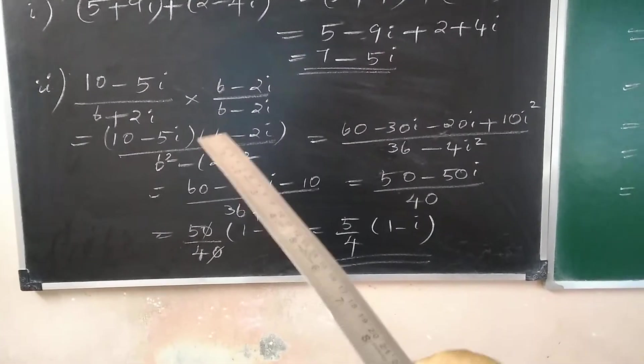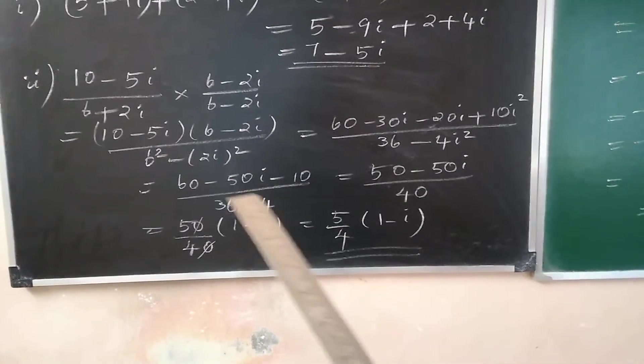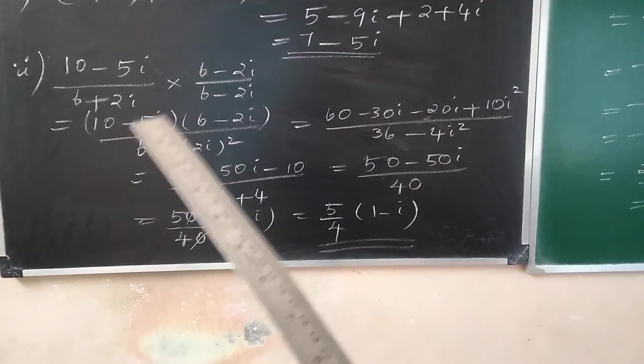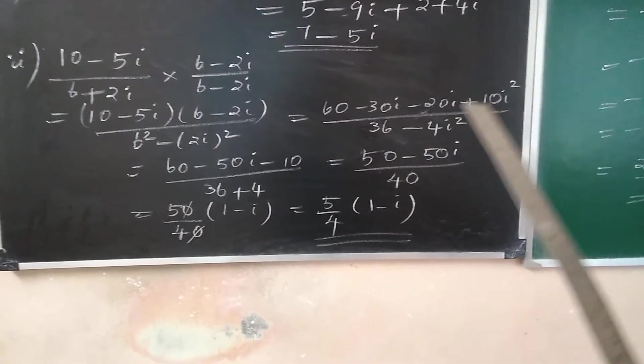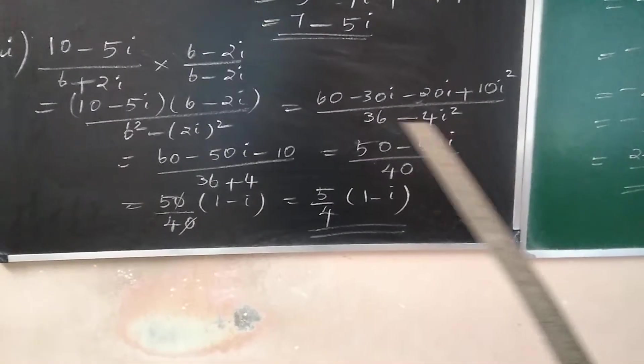Numerator I am multiplying term wise: 10, 6 or 60 minus 5i into 6 is minus 30i minus 2i into 10 is minus 20i minus 5 into minus 2i is 10i square. Denominator is 36 minus 4i square.